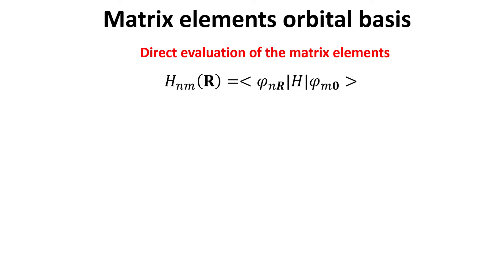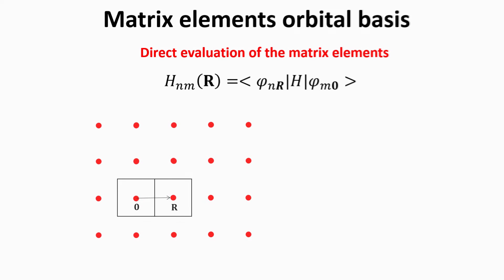Our approach is to explicitly calculate the matrix elements in the orbital basis for the simplest case possible and then generalize. The matrix element is given above. For visualization purposes, we define a crystal with a 2D square lattice and a basis of a single atom. We show two unit cells separated by a lattice vector r. The unit cell at the origin, with lattice vector 0, is referred to as the home unit cell. We then define the valence orbital states for electrons in each atom, and for simplicity we assume electrons occupy s-orbital type states.